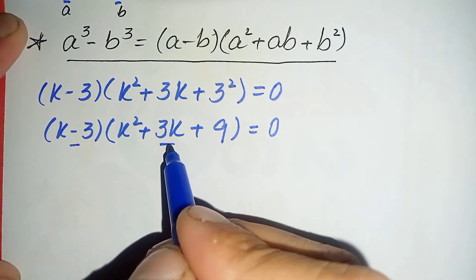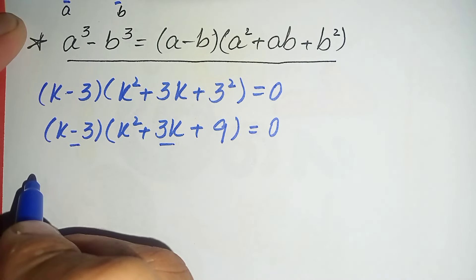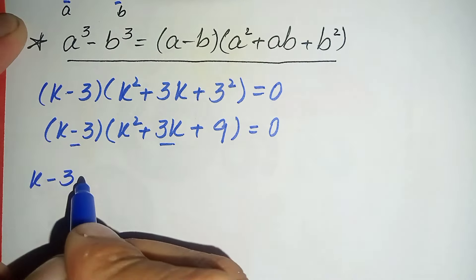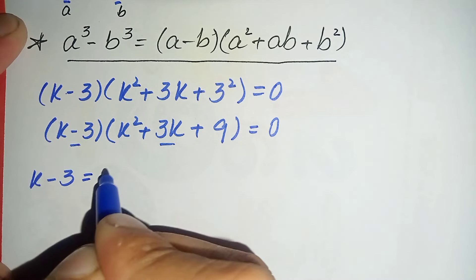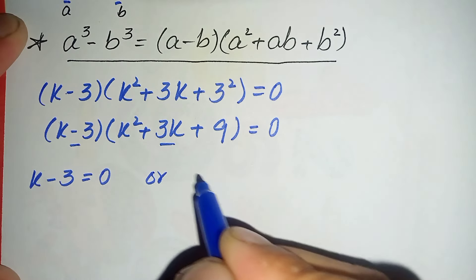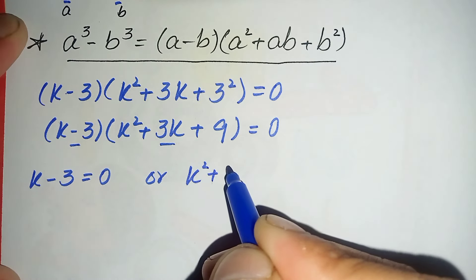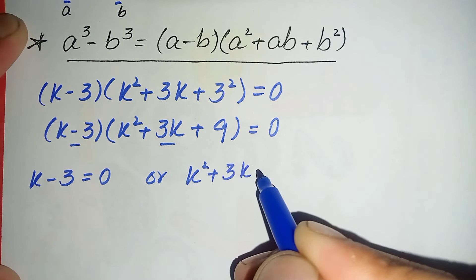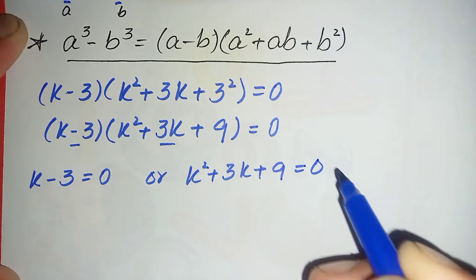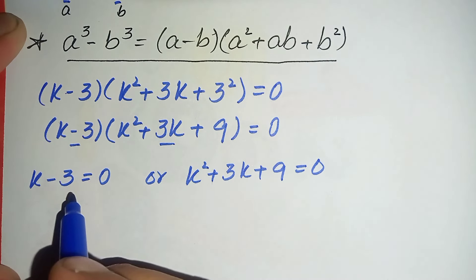Here the product of these two expressions is zero, so either the first expression will be zero or the quadratic expression will be zero. From here we will get two equations: k minus 3 equals zero, or k squared plus 3k plus 9 equals zero.